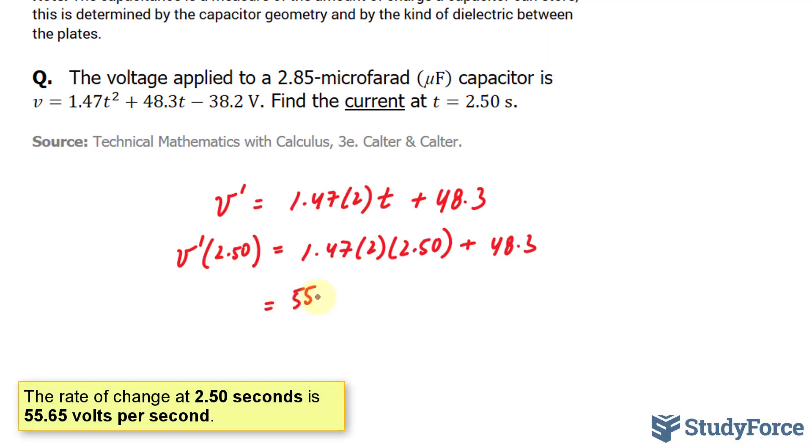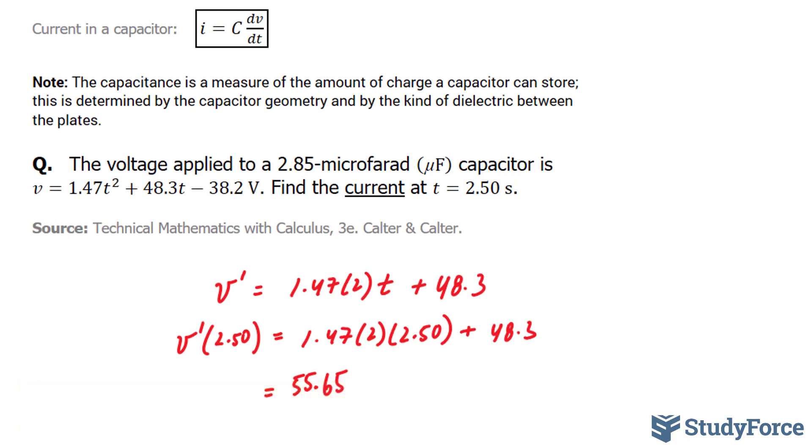Now to be consistent with the equation they provided, let's use dV/dt instead of V prime. My last step is to substitute this value and multiply it by 2.85 times 10 to the power of negative 6 farads. So our current equals 2.85 times 10 to the power of negative 6 times 55.65.